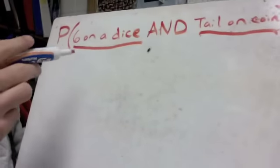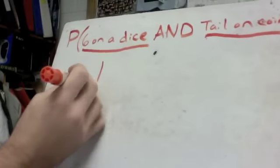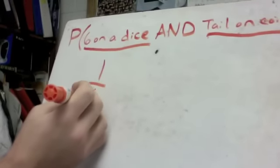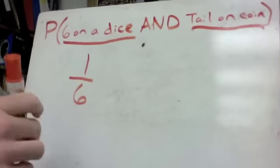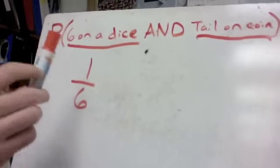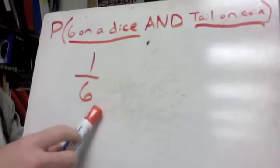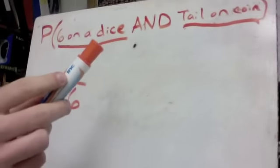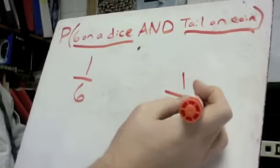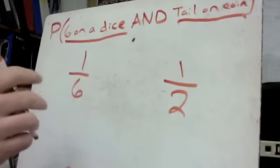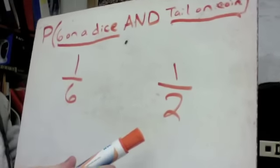The probability of getting a six on a dice is one out of six possible outcomes. You could get a one, two, three, four, five, or six — only one of those gets us a six, so it's one out of six. A tail on a coin would be one out of two. You have two outcomes, only one of them is a tail, so it's one out of two.